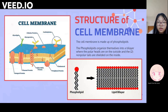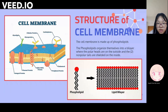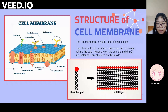Another important thing we need to know is the structure of the cell membrane, which will be very useful for the extraction. The cell membrane is made of phospholipids. The phospholipids organize themselves into a bilayer where the polar heads are on the outside and the nonpolar tails are shielded on the inside.